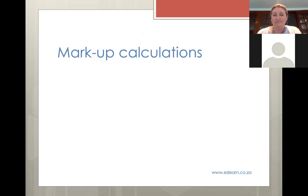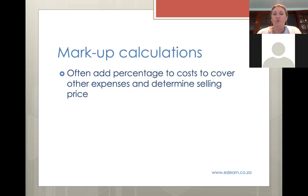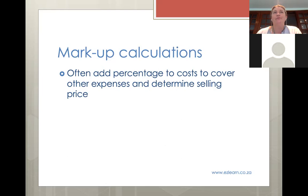Now this is where it gets interesting - we need to do some calculations to show a markup. Very often, businesses will say they're going to add a percentage of their costs onto that cost to get a selling price. Instead of just guessing an amount, they might say they're going to add 50% or 100% of that cost to work out the selling price. You've vaguely heard of this from last year - it's not the only way to determine prices; you can also look at supply and demand.